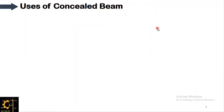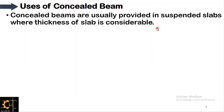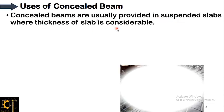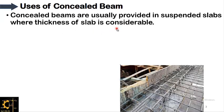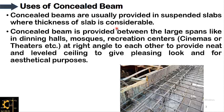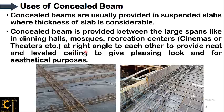Concealed beams are usually provided in suspended slabs where the thickness of the slab is considerable. They are provided on larger spans around suspended slabs where a parapet wall or stone masonry is desirable over the slab. Concealed beams are also provided between large spans like in dining halls, mosques, recreation centers like cinemas or theaters, at right angles to each other.